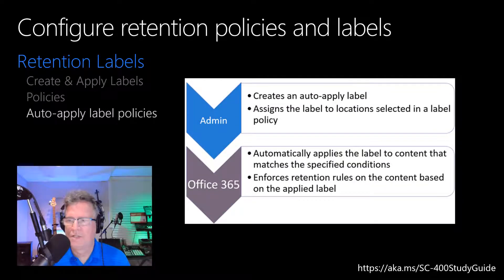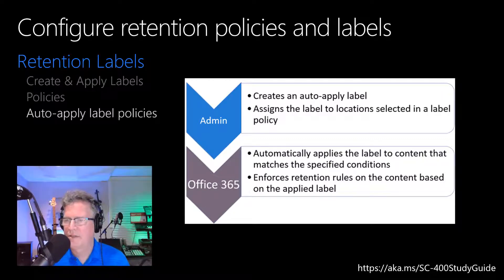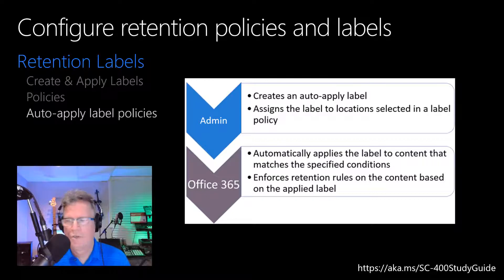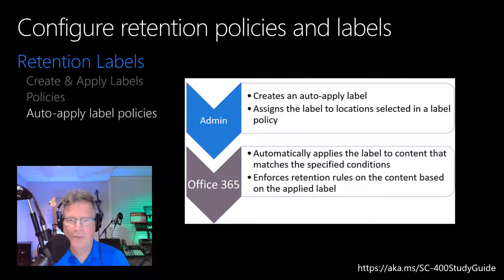One of the most powerful features of retention labels is the ability to apply them automatically to content that matches specified conditions. In this case, people in your organization don't need to apply the retention labels — Microsoft 365 does the work for them. Auto-applying retention labels means you don't need to train your users on all your classifications, don't need to rely on users to classify all content correctly, and users no longer need to know about data governance policies. You can apply retention labels automatically when content contains sensitive information, keywords, searchable properties, or a match for trainable classifiers. This may be a good time to pause the video and review the graphic shown.